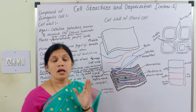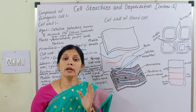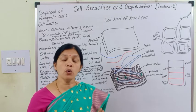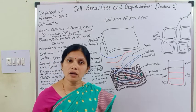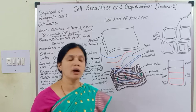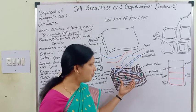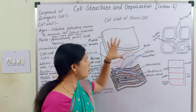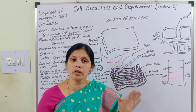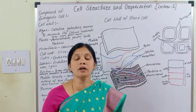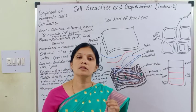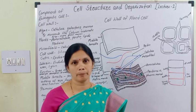Cell wall. Cell wall is a rigid, protective outer covering of the plasma membrane. This is called the cell wall.